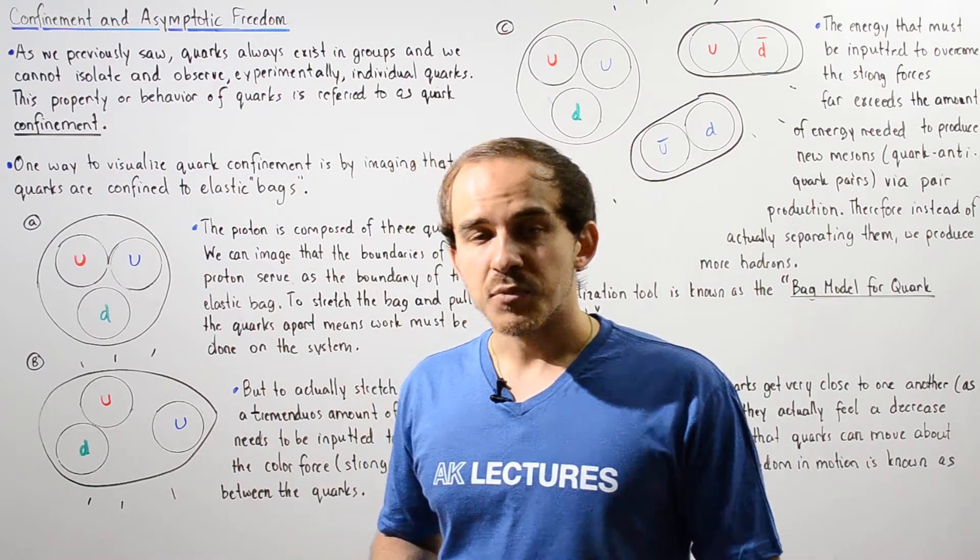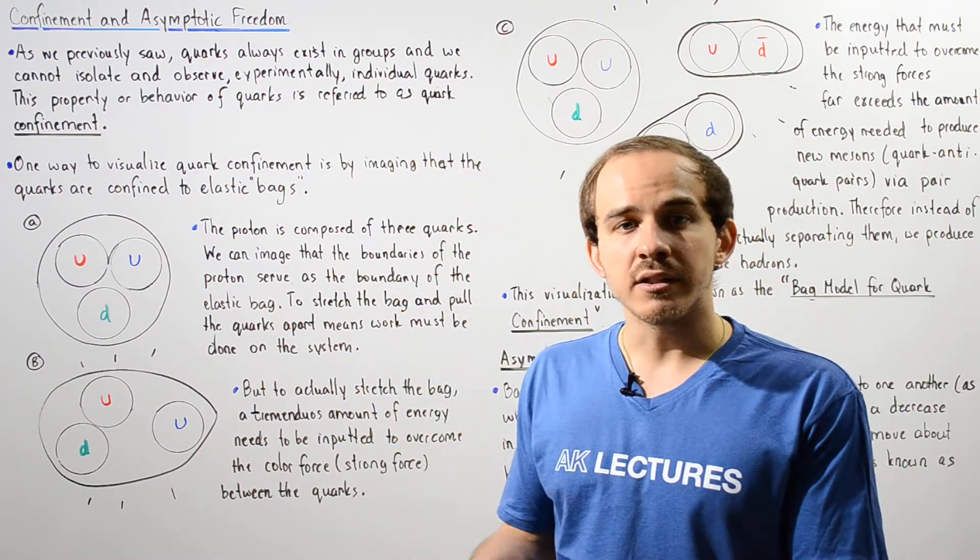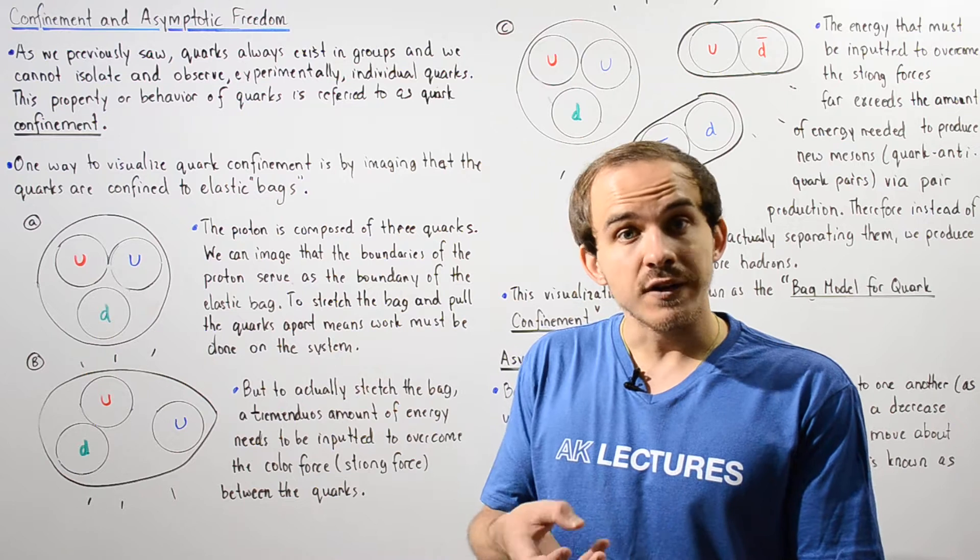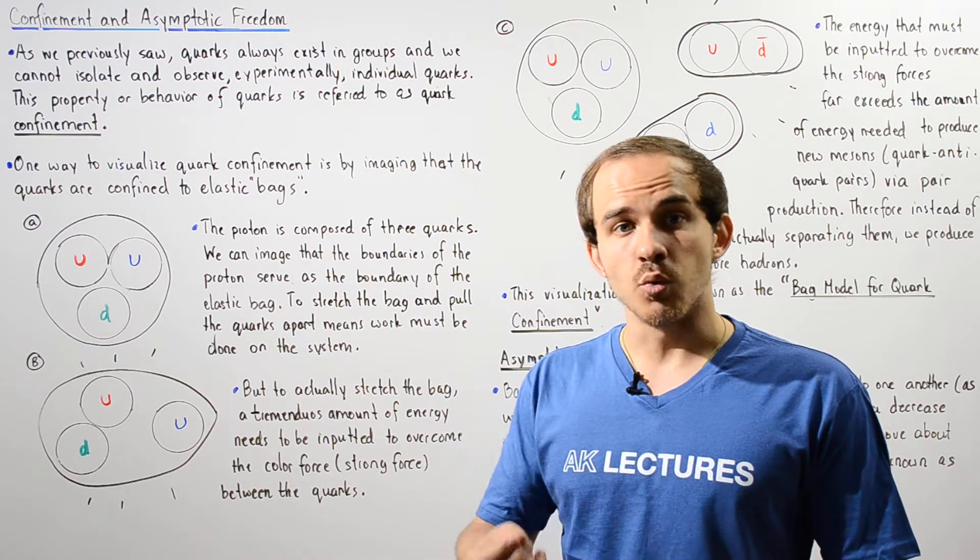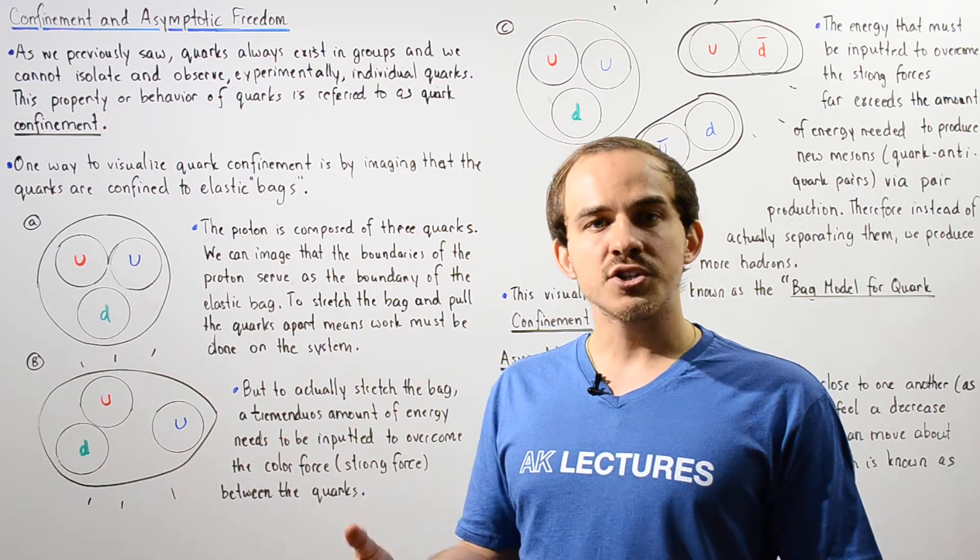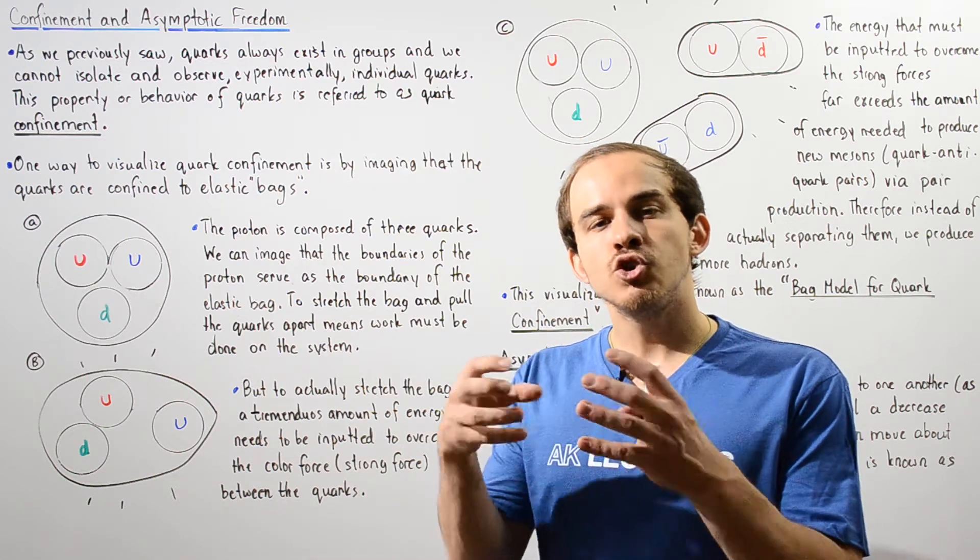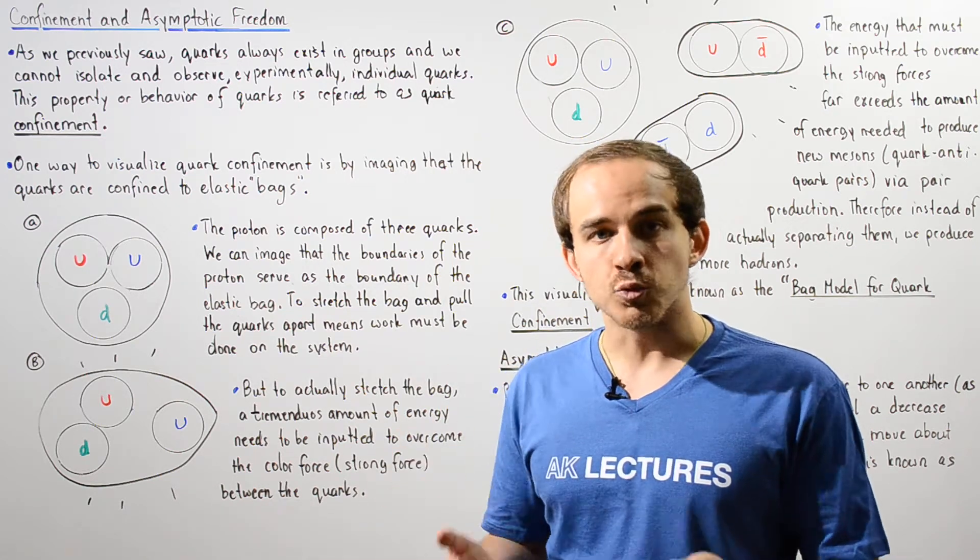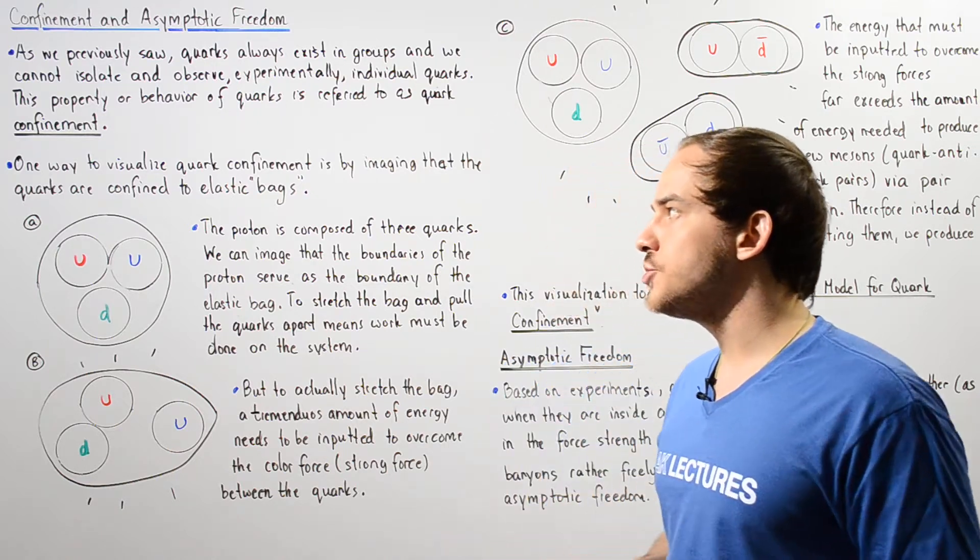Our inability to actually experimentally isolate, observe and examine an individual quark is known as quark confinement. So quarks are always confined to existing in a group rather than as individual species.